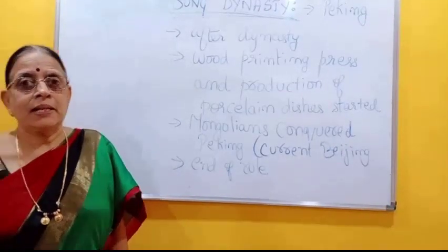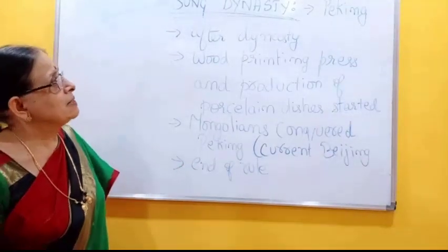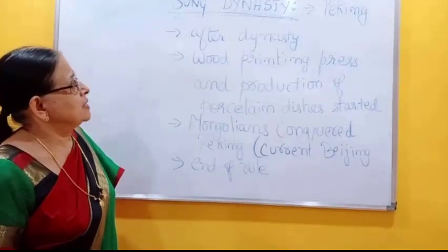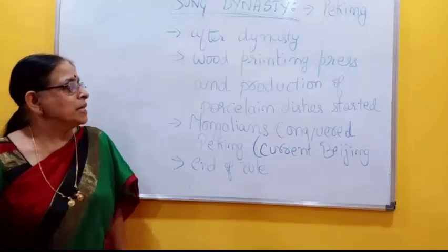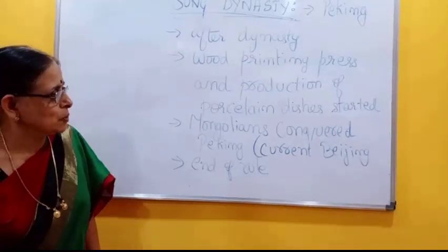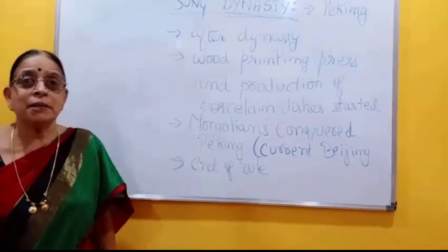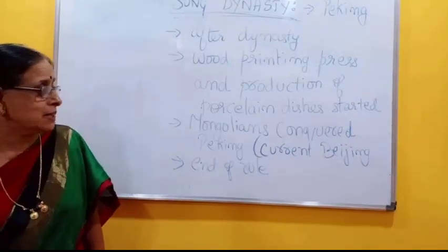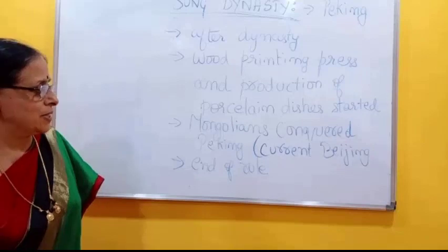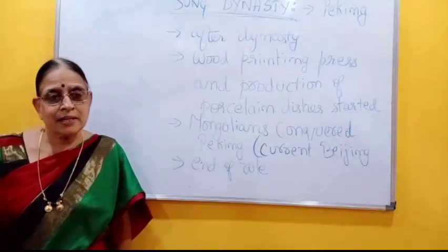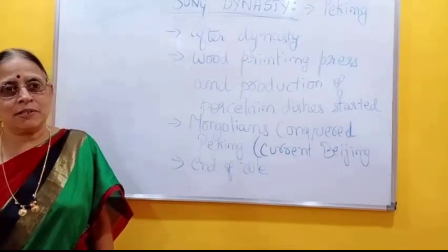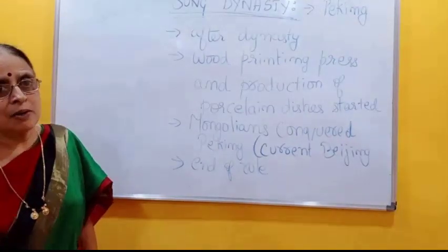The last dynasty of Chinese civilization is Song dynasty. Peking was the capital of Song dynasty. During this period, the wood printing press and production of porcelain dishes started. Wood printing press was started during this period. After Song dynasty, Mongolians, a tribal race, conquered China and Song dynasty came to an end. This dynasty saw great heights of progress, as all-round development was seen.